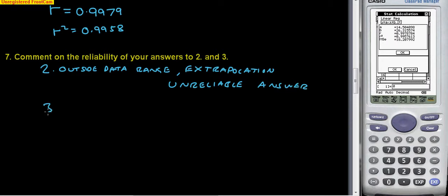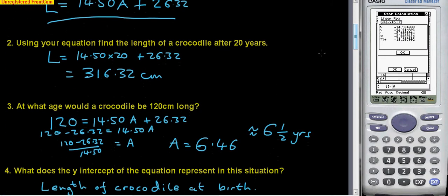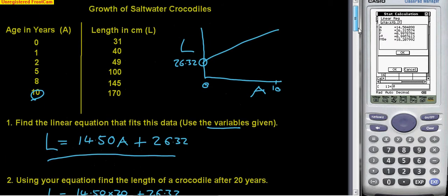Question three, let's have a look at that. Question three: at what age would a crocodile be 120 centimeters long? And we got six and a half years roughly. Let's go up there. 120 centimeters, well 120 would fit within our data range so that would be no problem, and six and a half years would come somewhere in there as well. So that's also within the data range. We've got no problem, we are definitely within the data range.